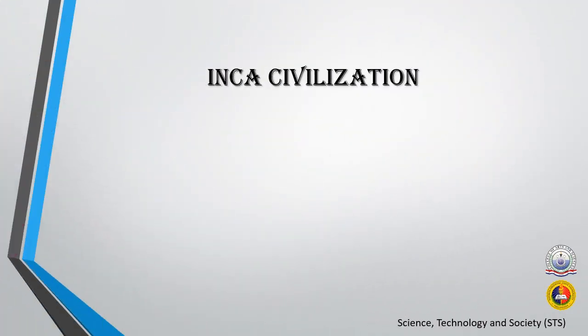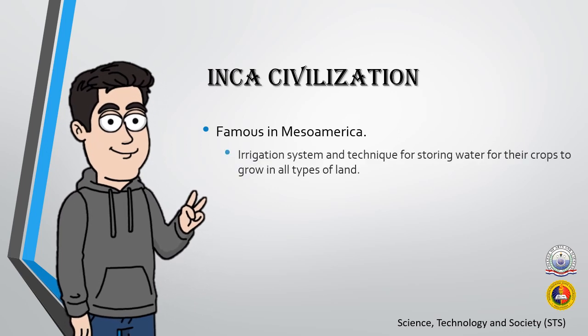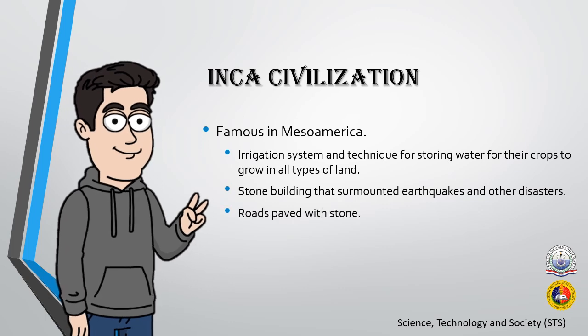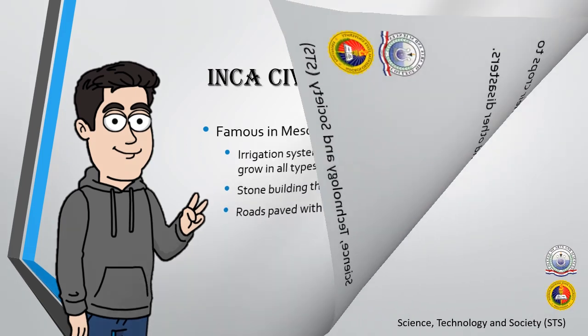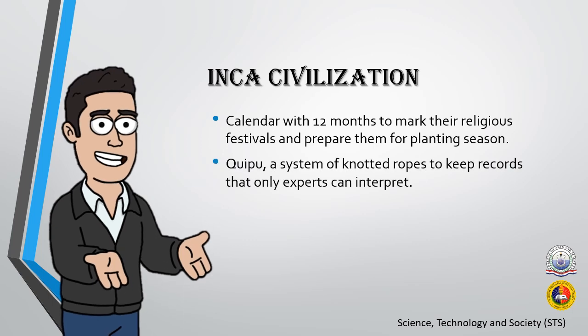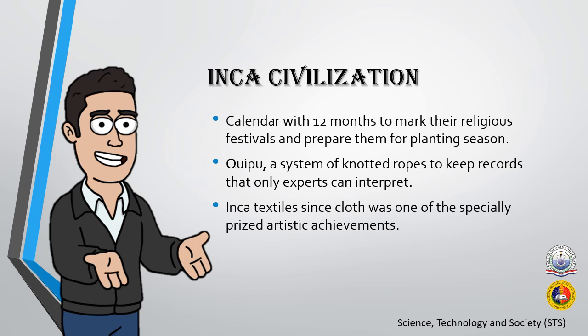Inca Civilization: Famous in Mesoamerica for their irrigation systems and techniques for ensuring water reached their crops in all types of land. They built stone buildings that could withstand earthquakes and other disasters, and roads paved with stone. Their calendar had 12 months to mark religious festivals and the planting season. The quipu — a system of knotted cords — was used to keep records. Inca textile and cloth was one of their most prized artistic achievements, and they built the first suspension bridges.